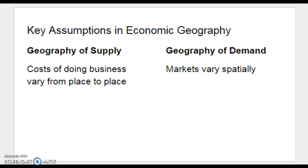For this particular unit, there are two aspects of economic geography. The first part is our development unit, highlighted in Chapter 9. There's also a second section corresponding with Chapter 12, which focuses primarily on the Industrial Revolution. I want to start with a brief overview of some key assumptions of economic geography — the geography of supply versus the geography of demand.